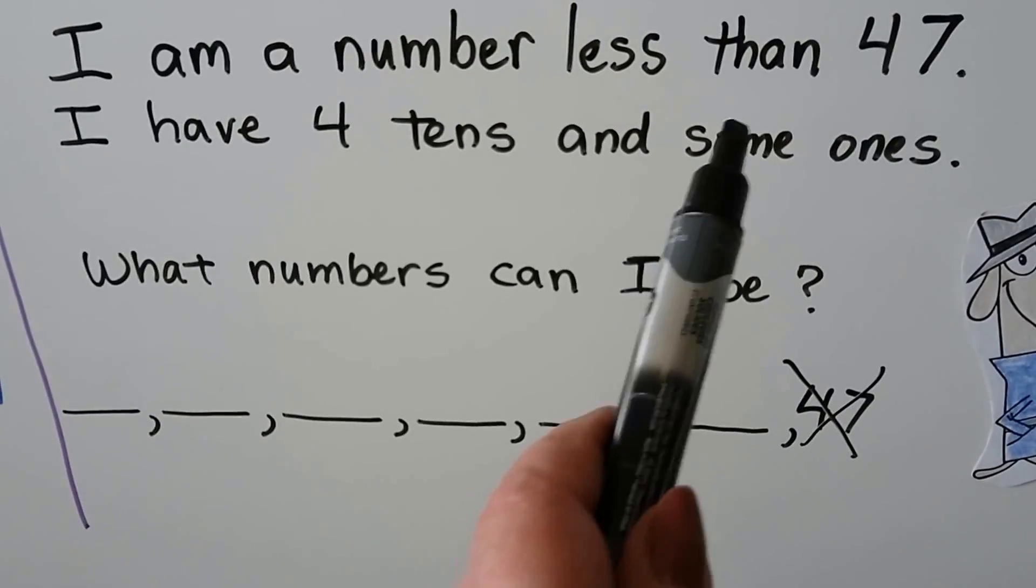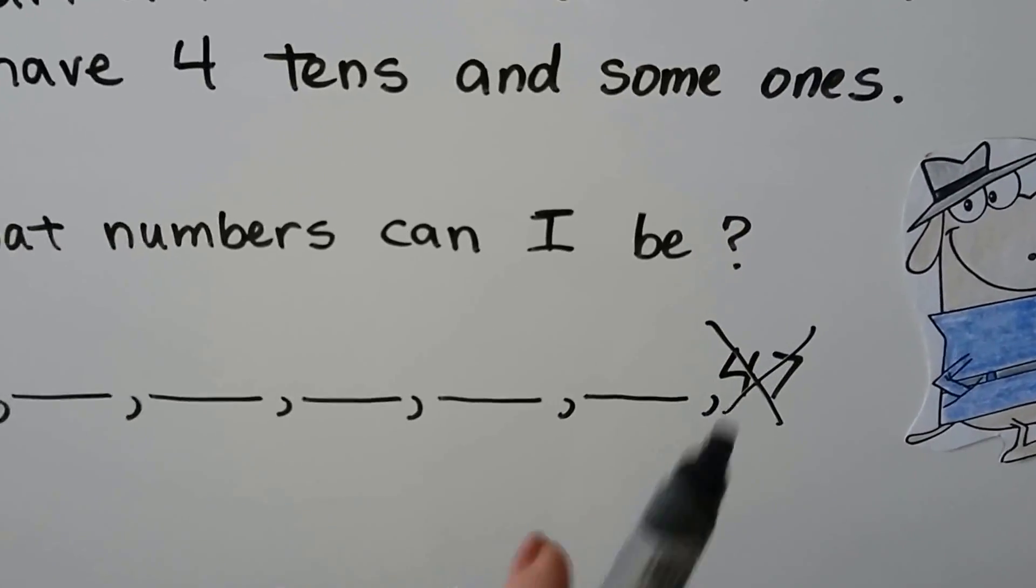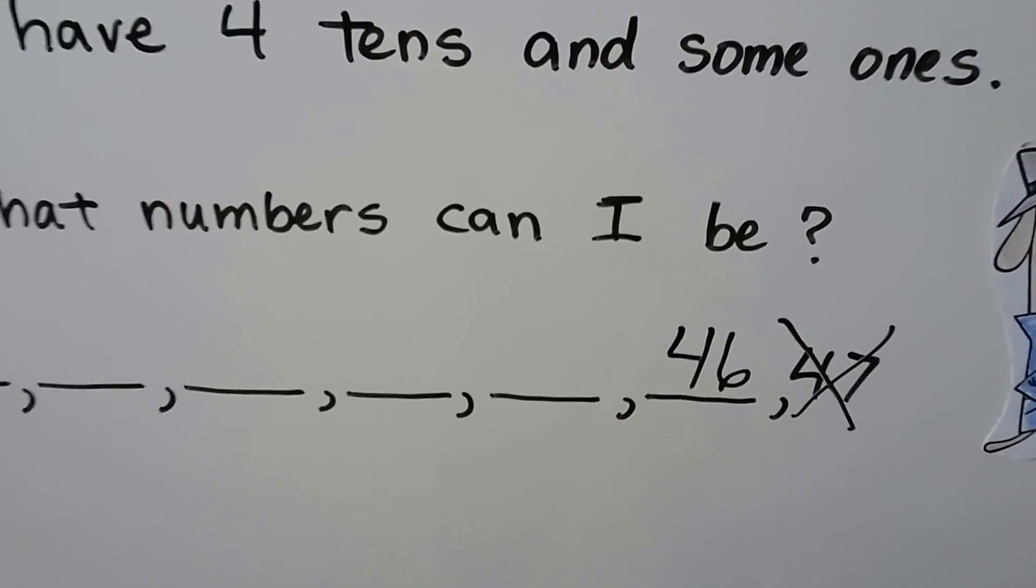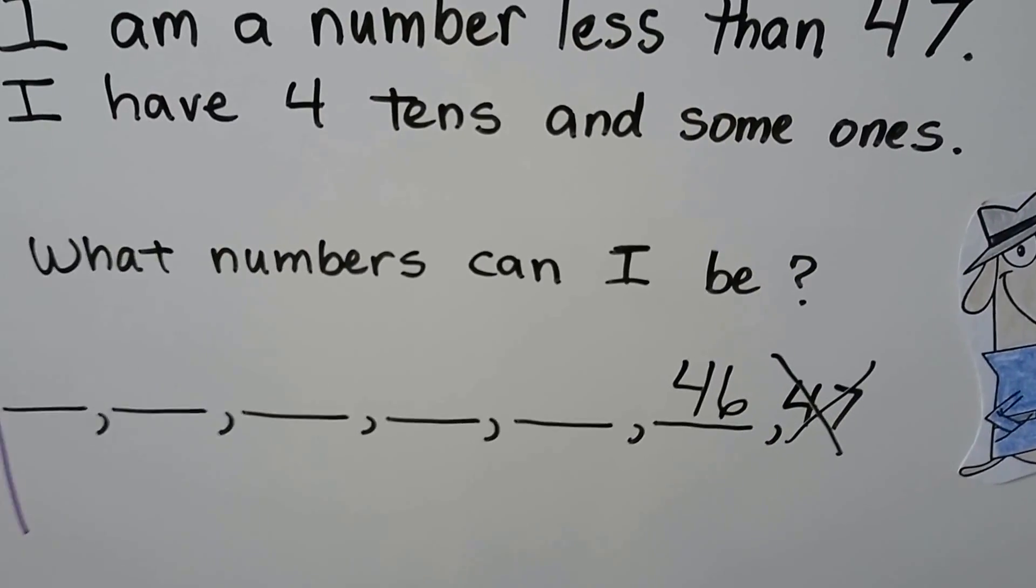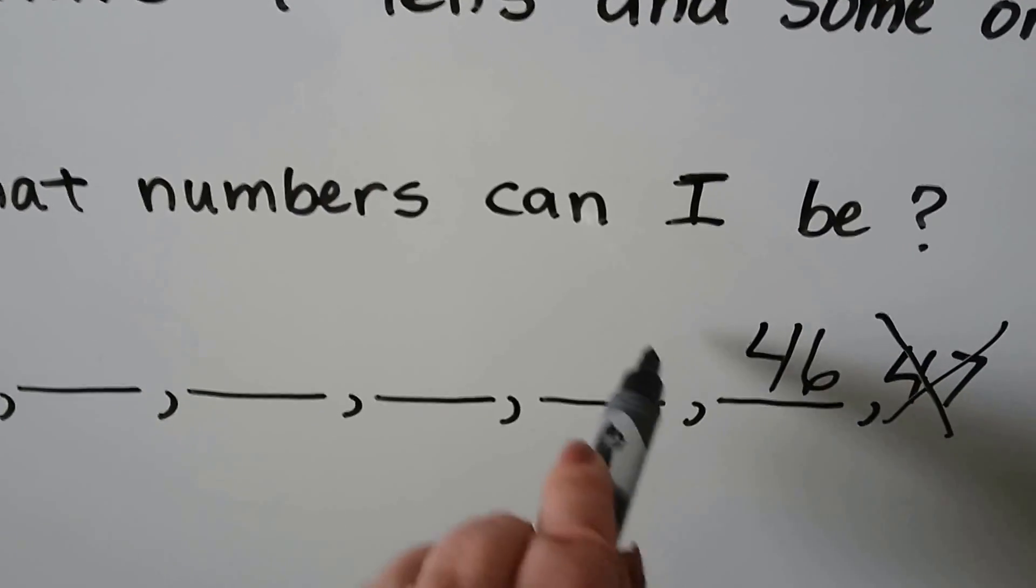It says it has four tens and some ones. The number that's just smaller than 47 is 46, and it has four tens and it has six ones. That fits.